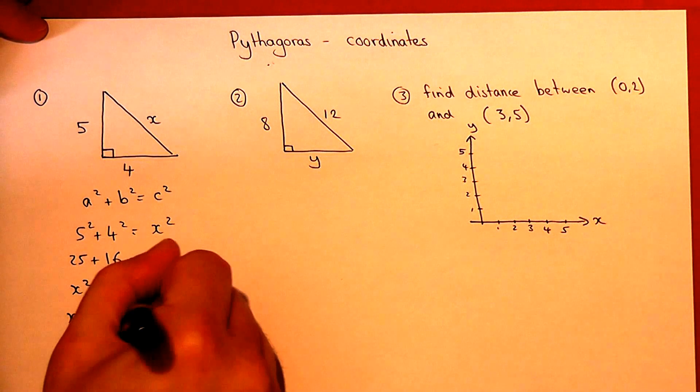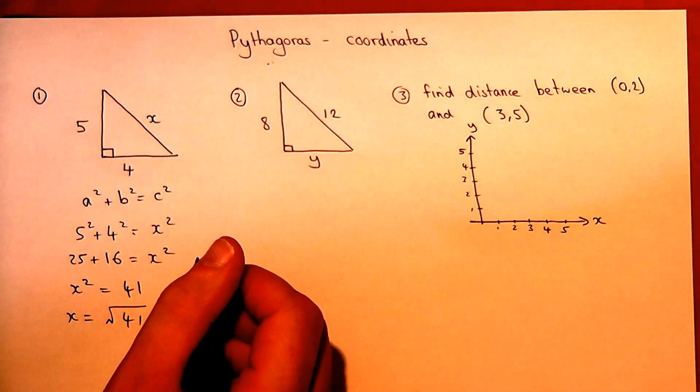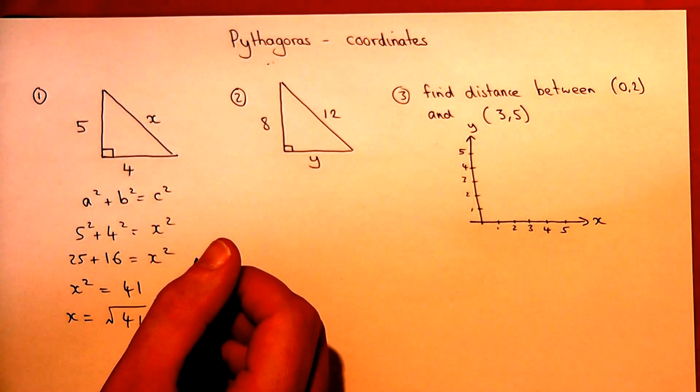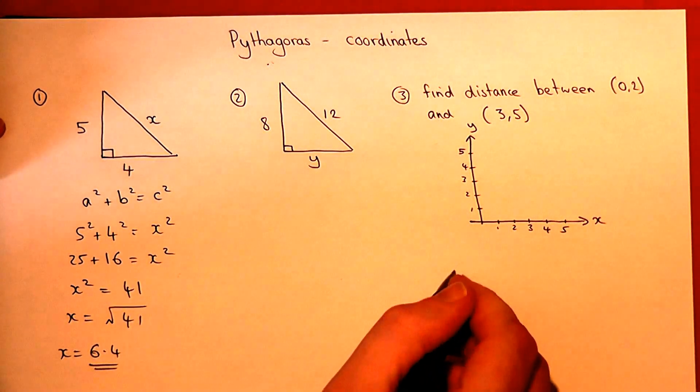So x is the square root of 41, which can be left as a surd, or we can work it out. Root of 41 equals 6.4, so x has a length of 6.4.